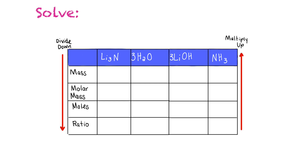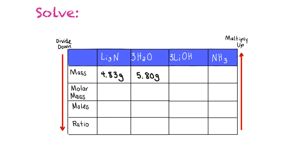We enter our masses: 4.83 grams of lithium nitride and 5.80 grams of water. The molar mass of Li₃N is 3 × 6.94 + 14.01 = 34.83 g/mol. The molar mass of H₂O is 2 × 1.01 + 16.00 = 18.02 g/mol.